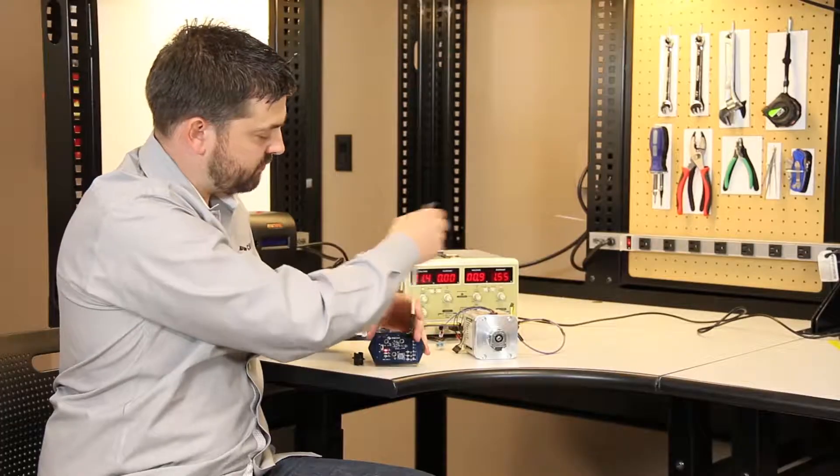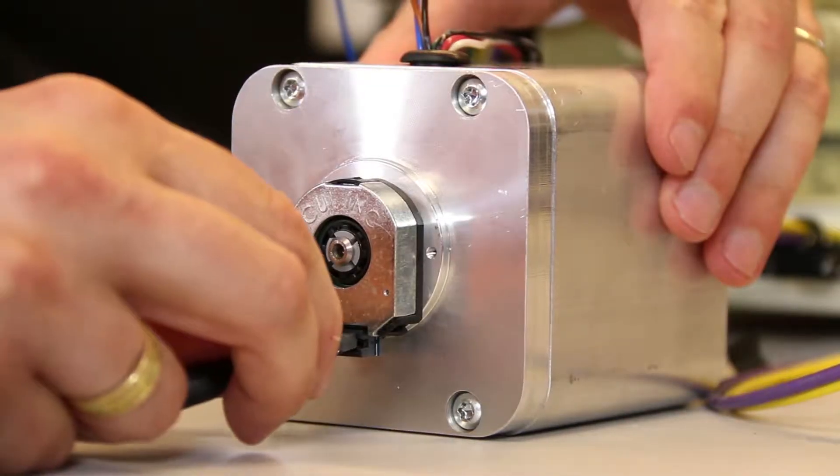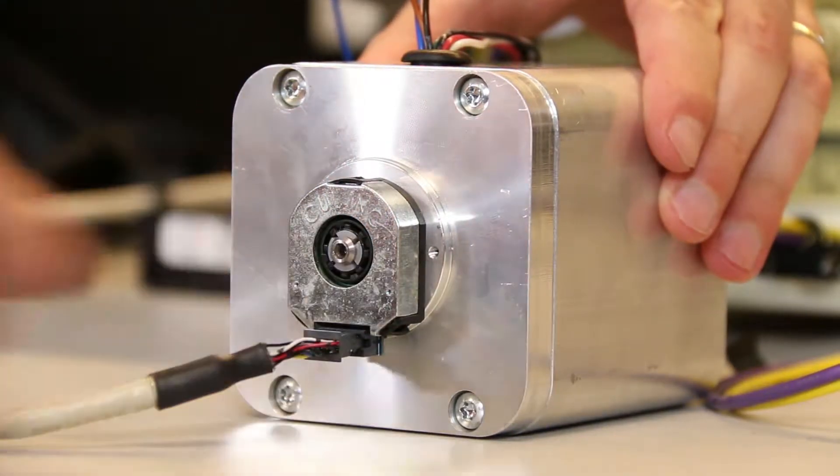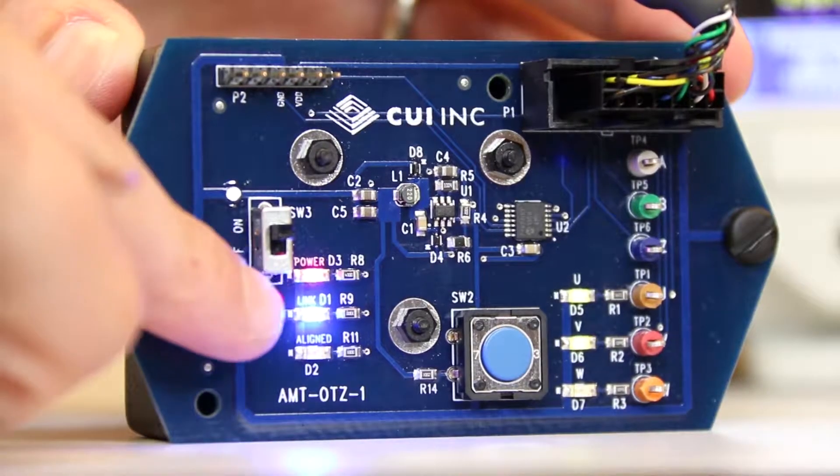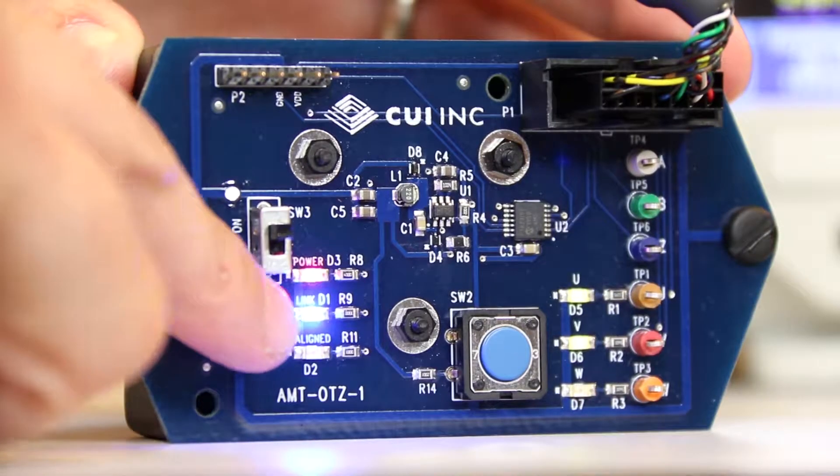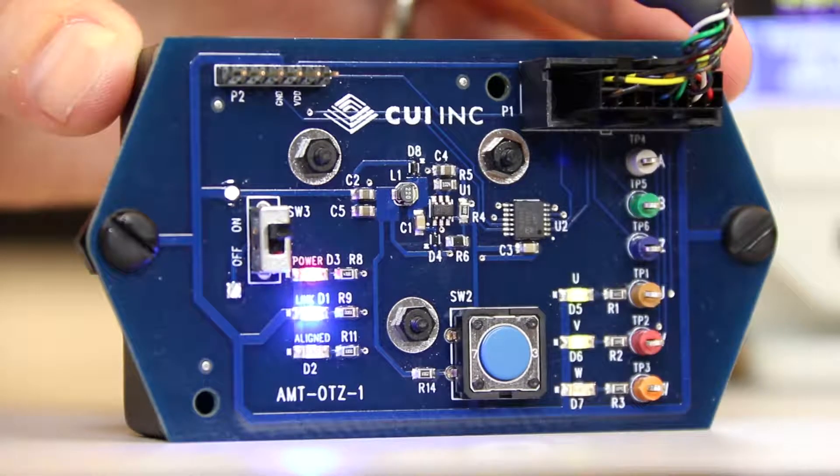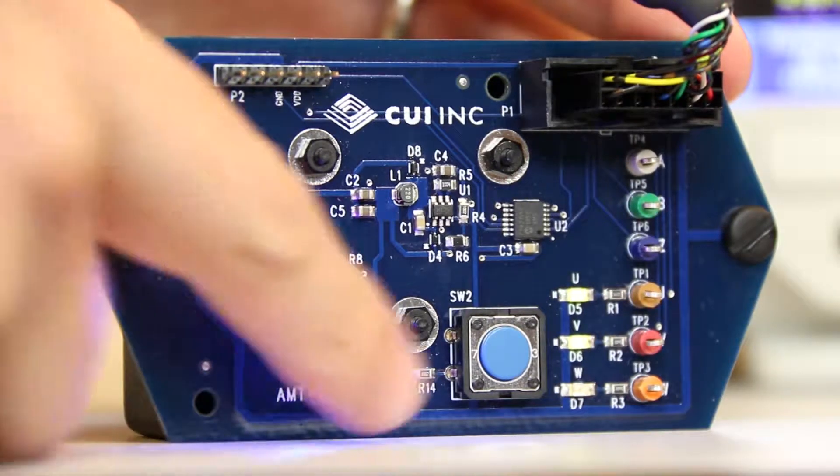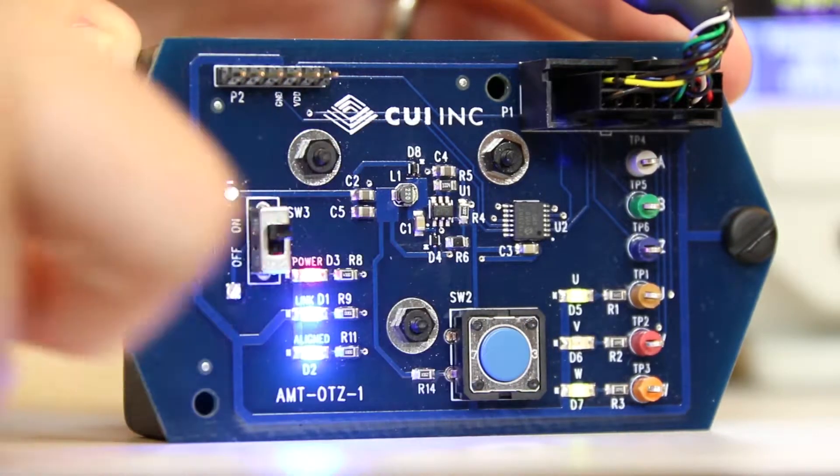Turn the module on, plug it into the encoder, check for link that we've got proper communication with the encoder, press the alignment button, and I've aligned this encoder.